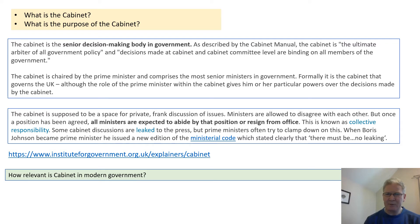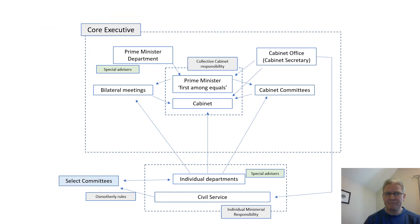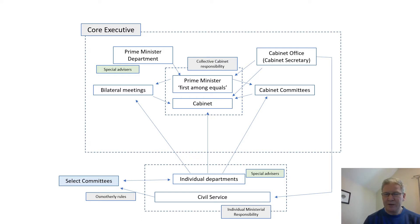The question has to be: how relevant is Cabinet in modern government? This diagram shows you how government is organised in the UK. You can see the Cabinet and the Prime Minister at the centre of the UK executive — the Prime Minister, first among equals, choosing their Cabinet to run the different individual departments. If you look at the bottom, you can see how individual departments run particular areas of the government.